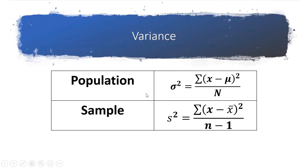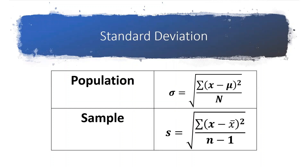The next measure of variation is the variance. We have two formulas for the variance: one for the population and the other one for the sample. Another measure of variation is the standard deviation, which is just the square root of the variance.